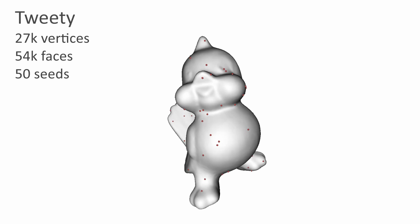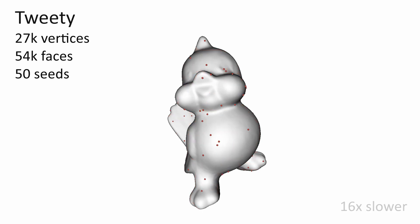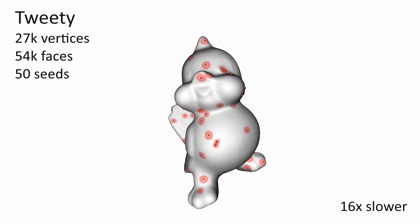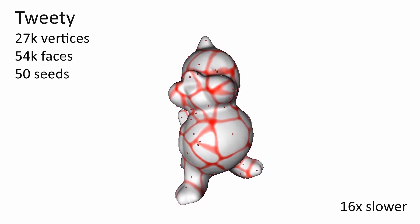The performance of our fully parallel approach allows instantaneous partitioning of small and moderately sized meshes. For illustration purposes, the field evolution is slowed 16 times.